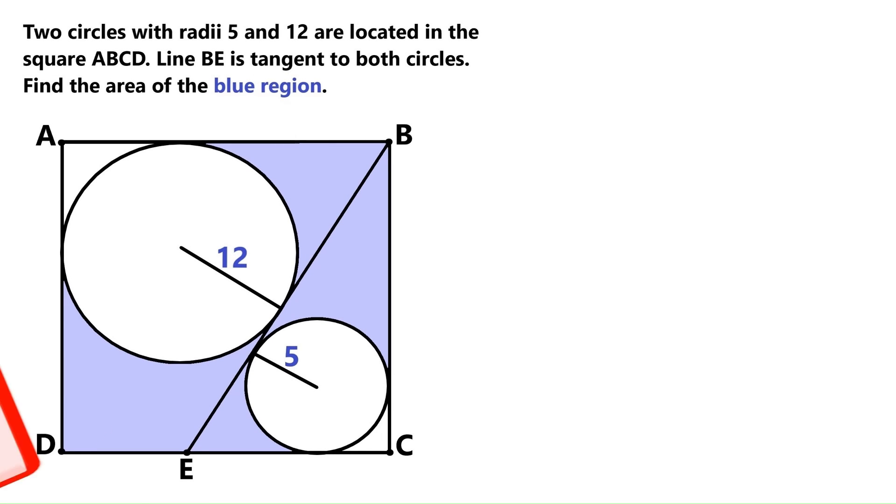In this super cool geometry problem, we've got this square ABCD, and these two circles are inside the square. This big circle's radius is 12, and this small circle's radius is 5.